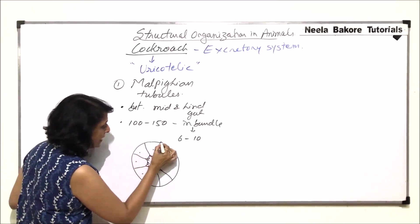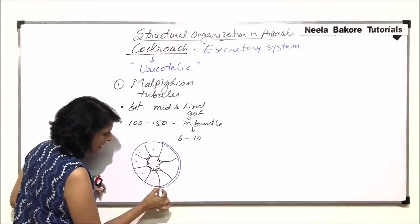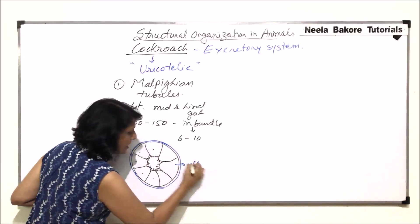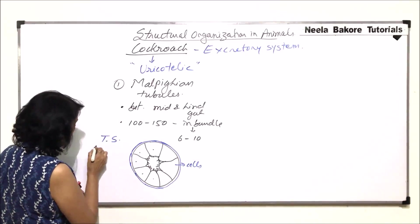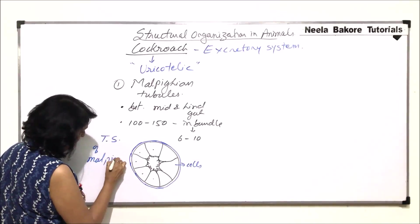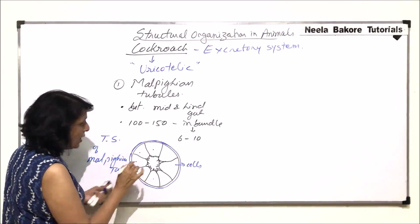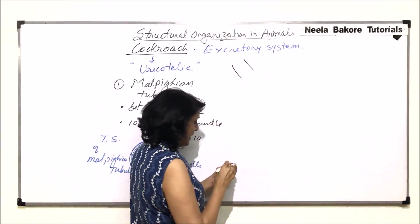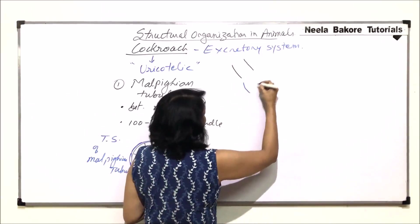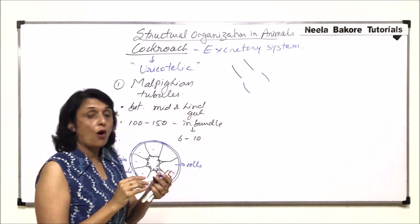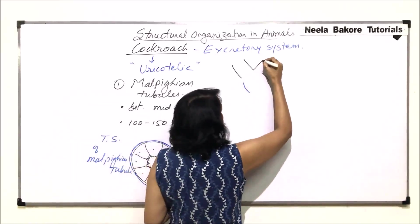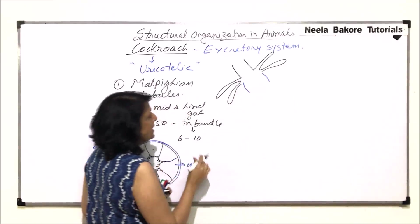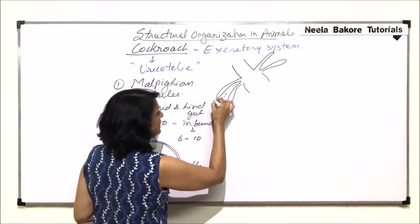The waste is collected from the body cavity, which is known as the haemocoel in cockroaches. Outside this there is a basement membrane, because this epithelium rests on the basement membrane. These large cells remove the waste. This is the transverse section of a Malpighian tubule. Now let us draw where exactly these Malpighian tubules are found — here is the midgut, and the hindgut is wider.